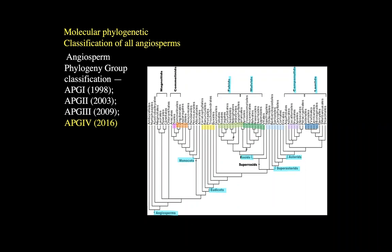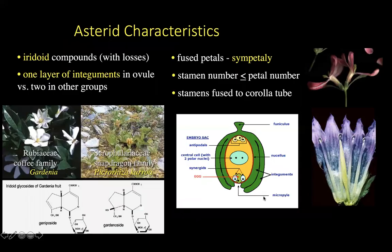Hello everybody, and welcome to the first lecture about the asterids. We've come a long way — we've talked about the nonlilioid monocots and all of the rosids. Now we're going to focus on this large clade, the asterids. There's a basal grade in light blue that we're going to talk about today, which I'm calling the super asterids. They do not form a clade. Then we will talk about the two major clades in subsequent lectures, the lamids and the campanulids.